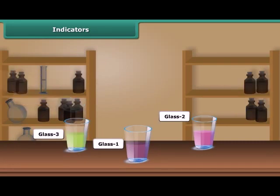Pour lemon juice in the first glass, water in the second glass, and soap solution in the third glass. What do you see? You can notice that in glass one, color changes to dark pink. Lemon juice is acidic in nature, so there is a change in the color of the indicator.